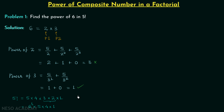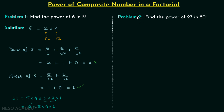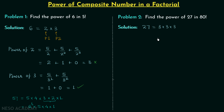We are done with problem number 1. In problem number 2 we need to find the power of 27, a composite number, in 80 factorial. In step 1, we write 27 as the multiplication of prime numbers: 27 = 3 × 3 × 3. Since we have three identical prime numbers, we simply find the highest power of prime number 3 in 80 factorial and then divide the result by 3.